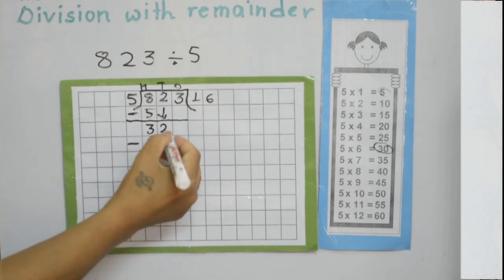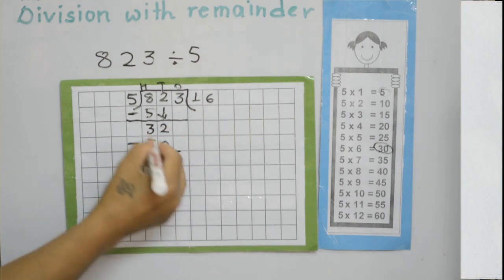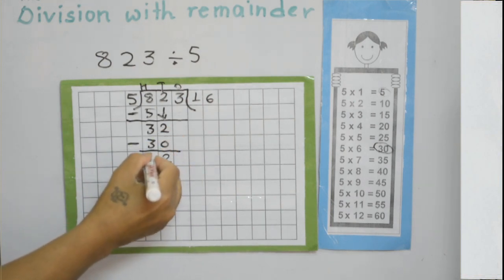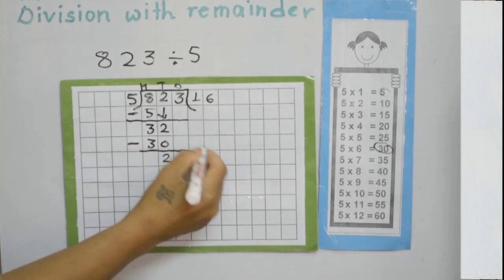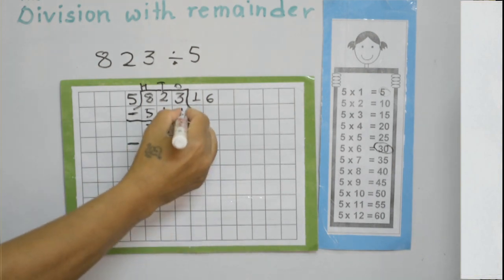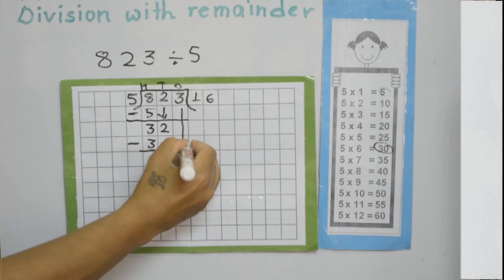Now subtract: 32 minus 30. 2 minus 0 is 2, and 3 minus 3 is 0. Now bring this 3 down — bring the ones digit down.